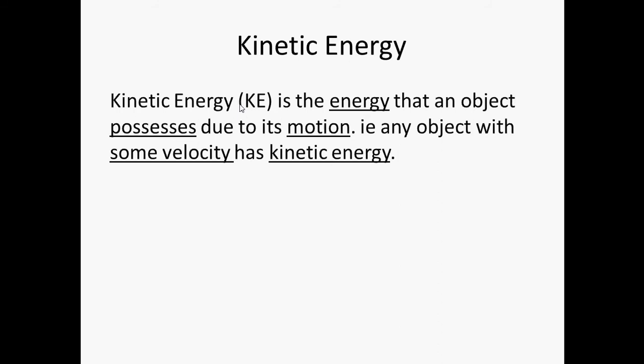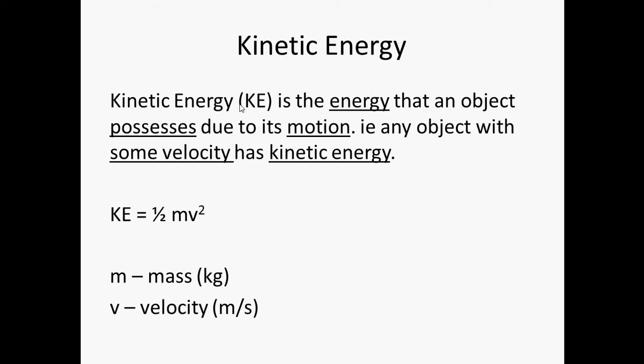What is kinetic energy? Kinetic energy is the energy that an object possesses due to its motion. That means any object with some velocity has kinetic energy. The formula for kinetic energy, or KE, is half mv squared. Here, m is the mass in kg, and v is velocity in meters per second. Remember it's v squared, not v.